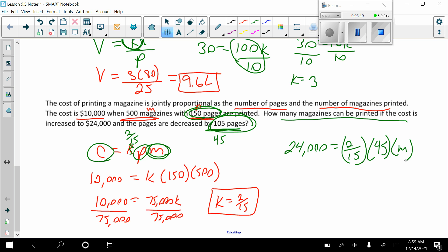Go ahead and solve for M and see what you get. When I did that, I showed my work, and I have 4,000. So M equals 4,000. So how many magazines can be printed? 4,000 magazines. And that is it.